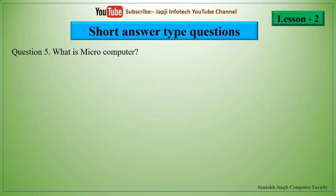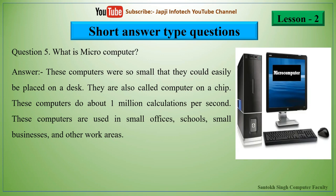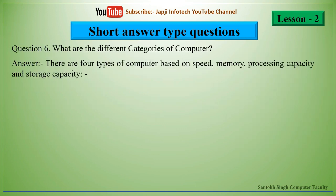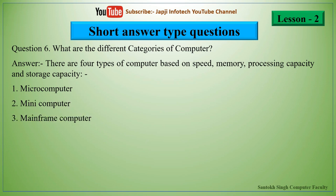The fifth question is: what is a micro-computer? These computers are so small they can be placed on a desk and are also called computer on a chip. They do about 1 million calculations per second and are used in small offices, schools, small businesses, and other work areas. The next question is: what are the different categories of computer? There are four types based on speed, memory, processing capacity, and storage capacity: micro-computer, mini-computer, mainframe computer, and supercomputer.